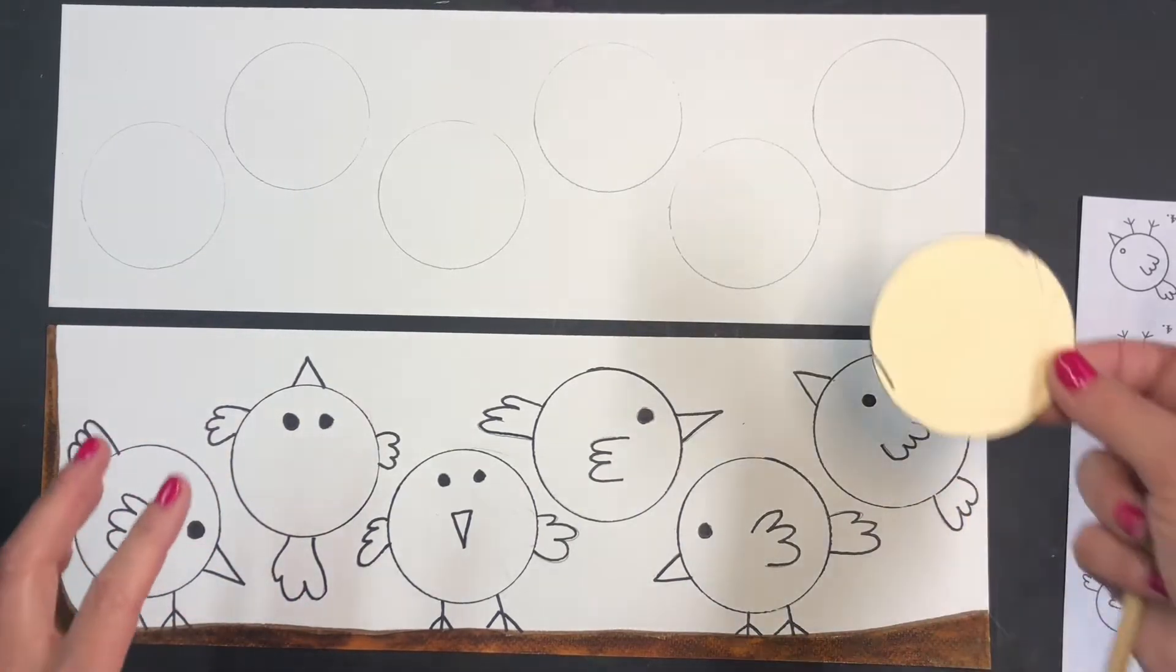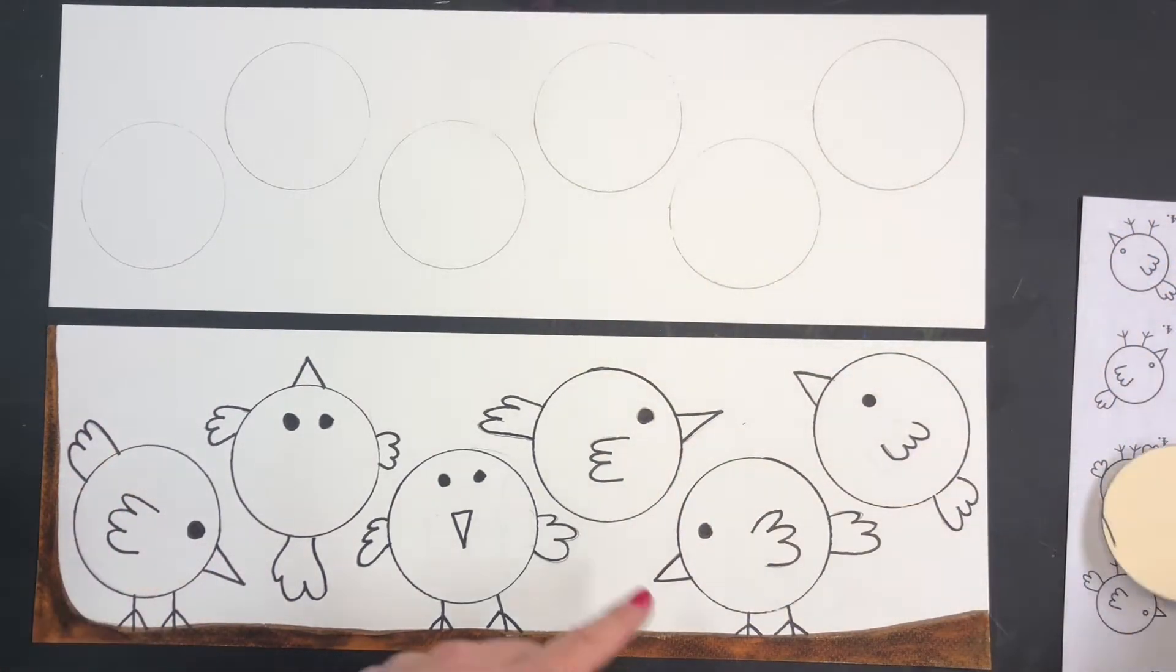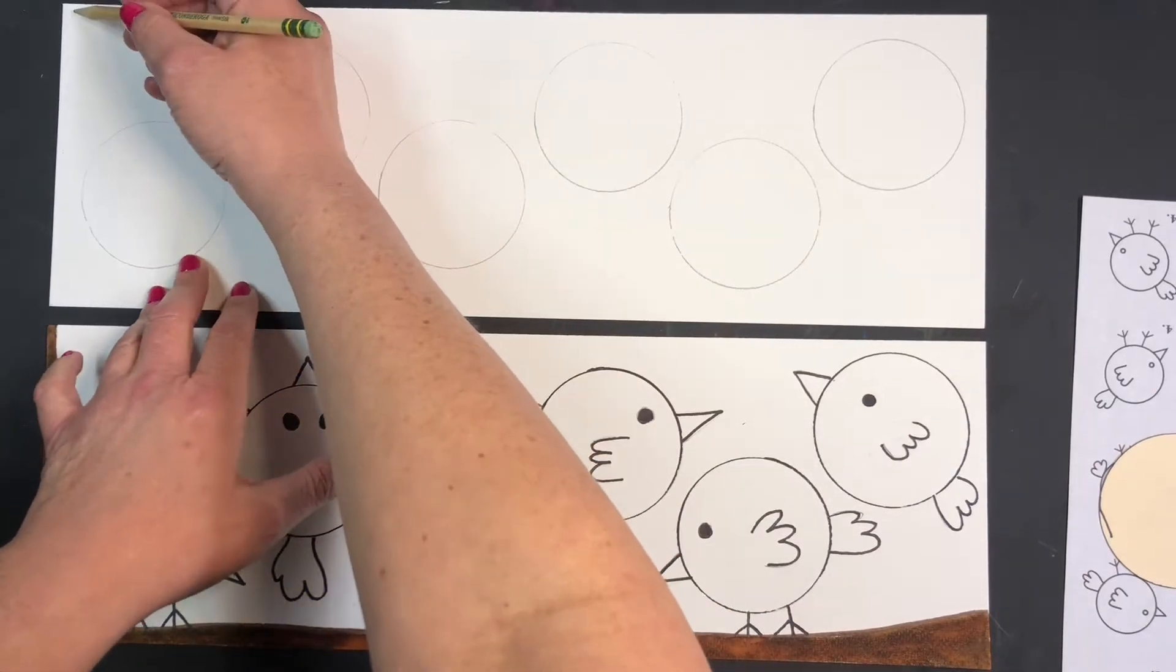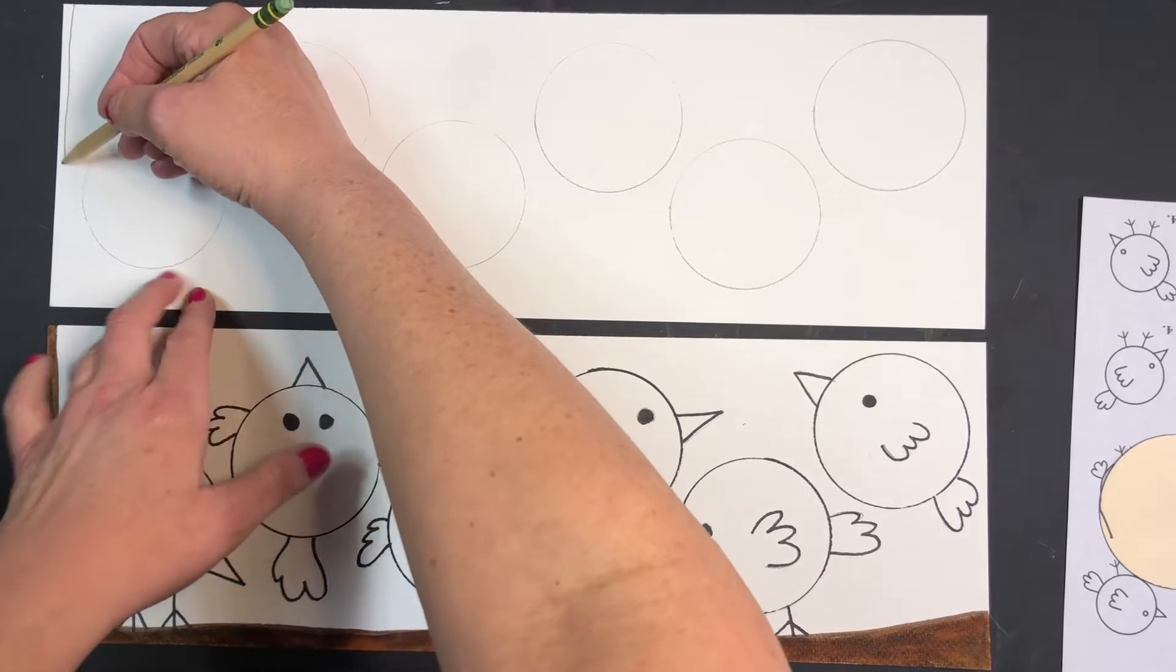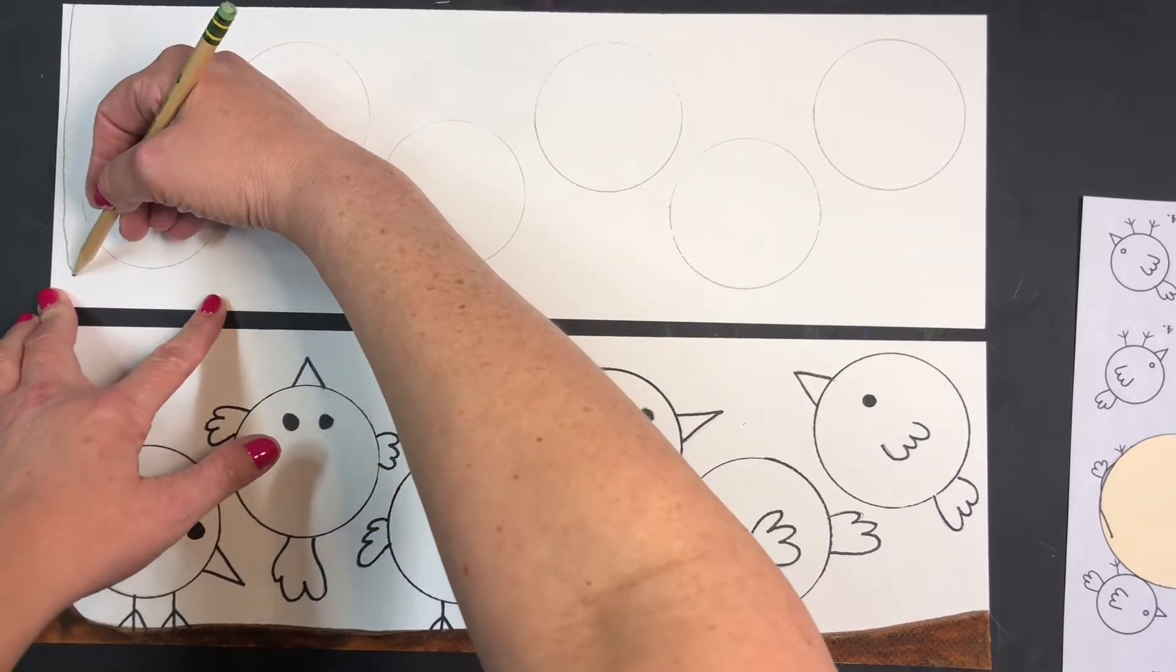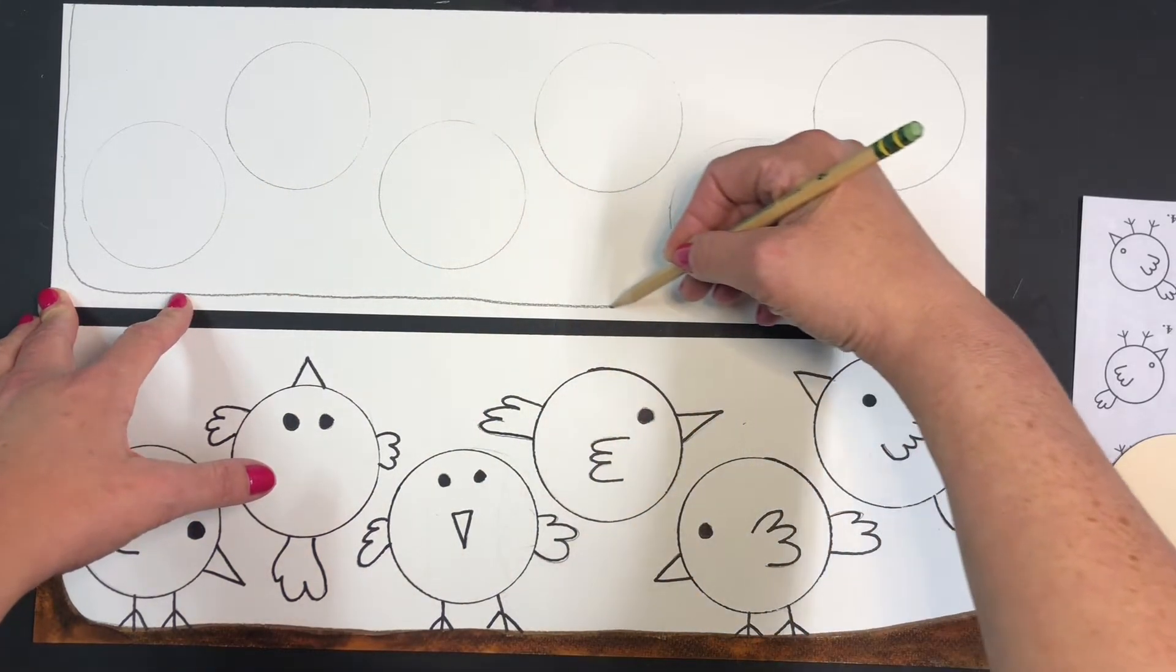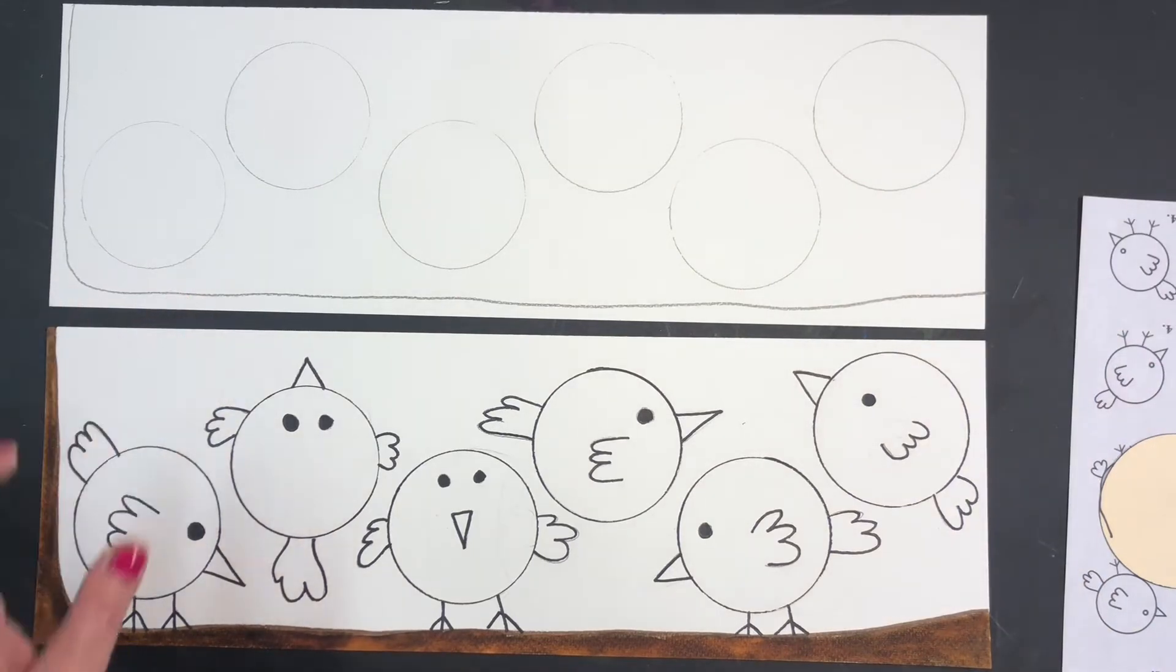So in order to achieve the look that I have on the bottom, the first thing we want to do before we trace our circles is we want to draw a branch. And the way that we draw a branch is literally just drawing a curved line along the left-hand side of the page. And then we continue it all the way down onto the bottom like that.